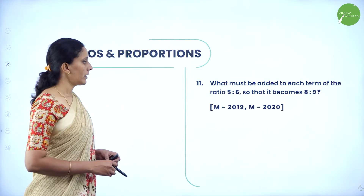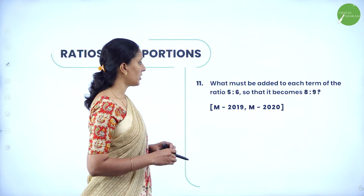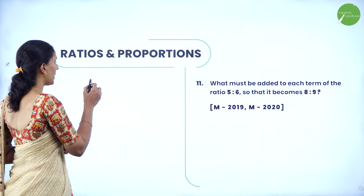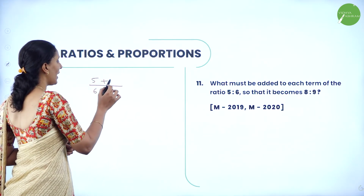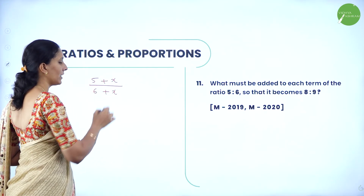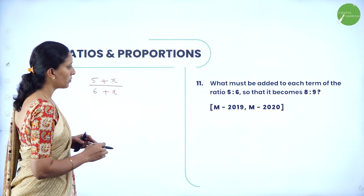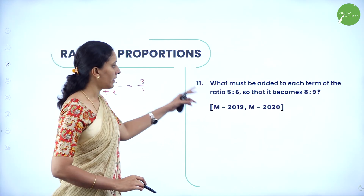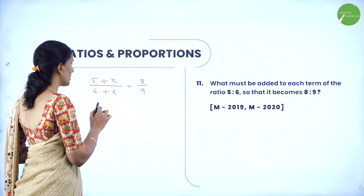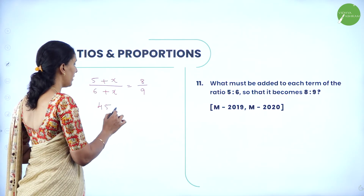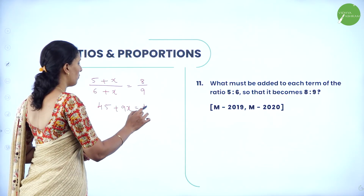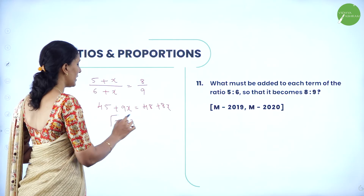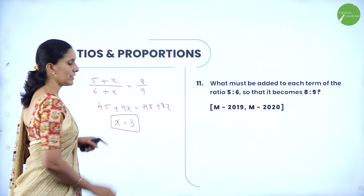Next: what must be added to each term of the ratio 5 is to 6 so that it becomes 8 is to 9? Let x be added to both terms: (5+x)/(6+x) = 8/9. Cross-multiplying: 9(5+x) = 8(6+x), giving 45 + 9x = 48 + 8x, so x = 3. Therefore, 3 must be added: 5+3 = 8 and 6+3 = 9.